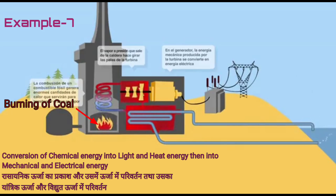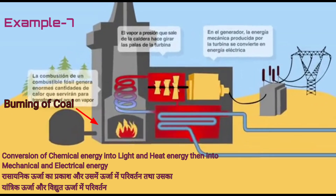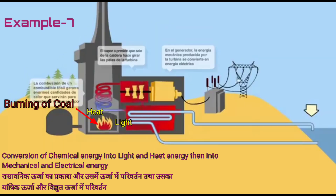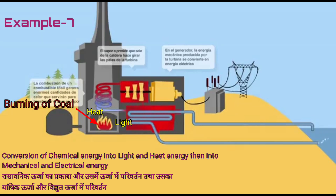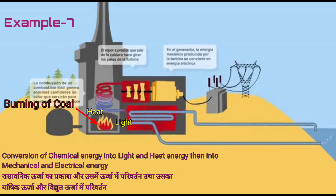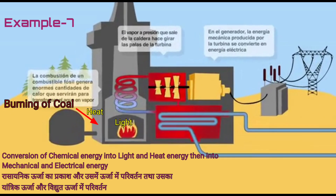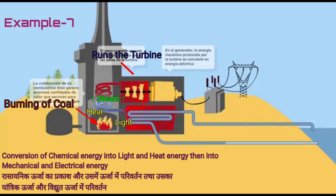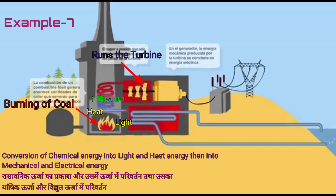When coal is burnt, chemical energy stored in the coal is converted into heat and light energy. The heat energy changes water into steam, and steam runs the turbine of the generator, which produces electricity.